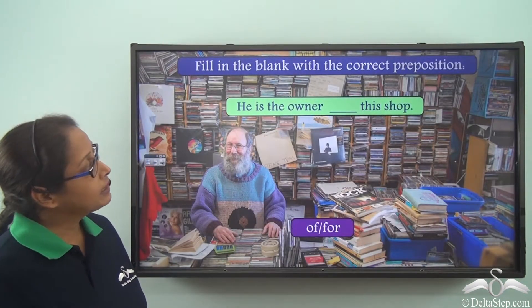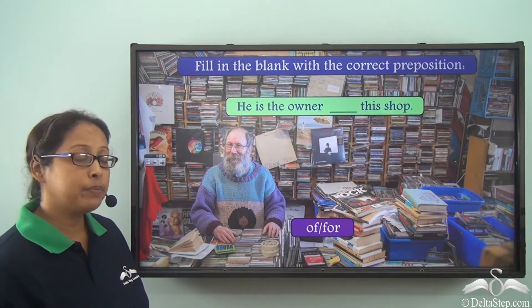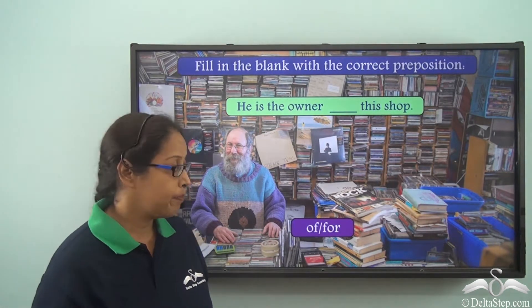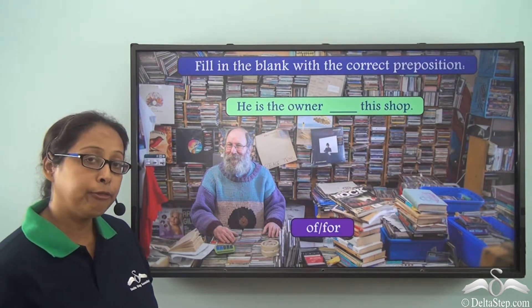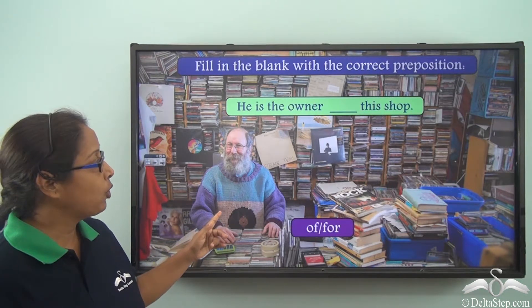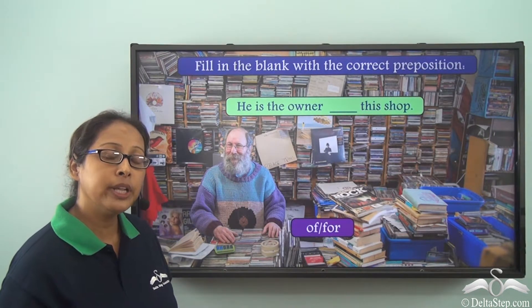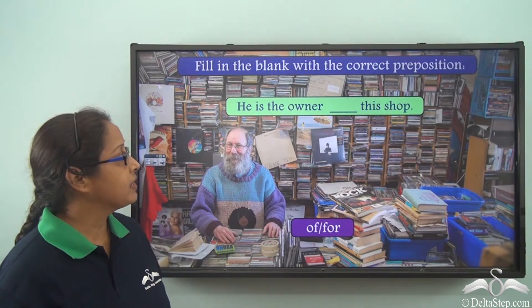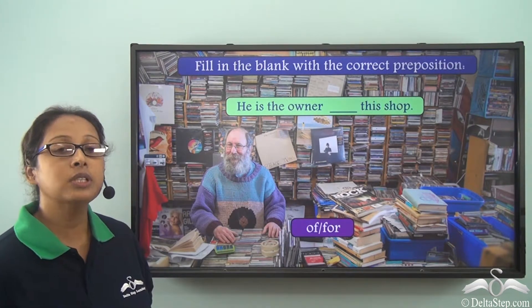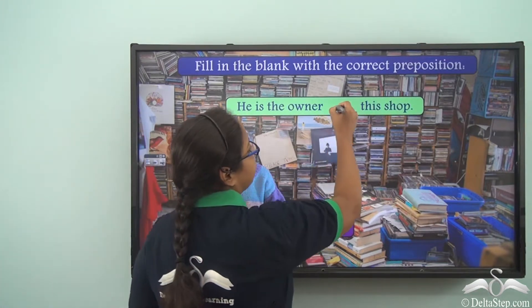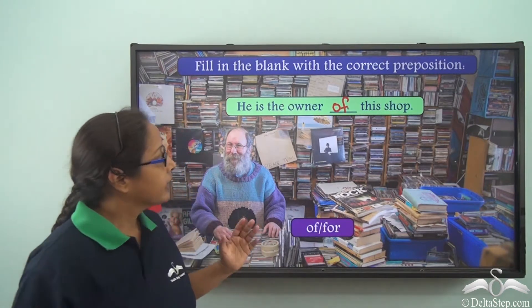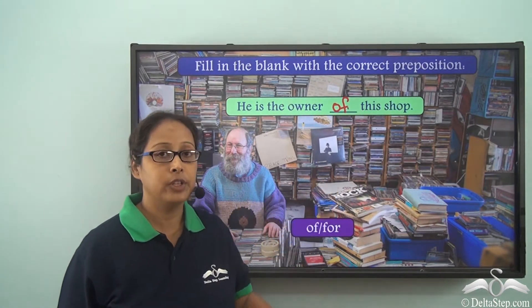Now let's fill in the blank with the correct preposition. He is the owner ___ this shop. The options are 'of' and 'for'. When something belongs to somebody, can we say 'he is the owner for this shop'? No. We will use the preposition 'of'. He is the owner of this shop.